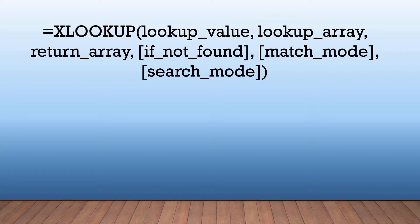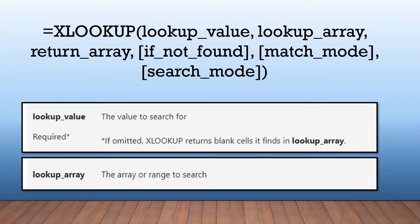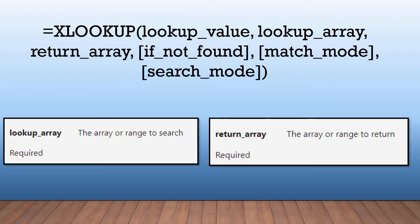Before we jump into today's example, it's important to look at the structure of XLOOKUP, as it differs from HLOOKUP and VLOOKUP. The function is written as =XLOOKUP. The first argument is the lookup value — the value to search for. This is required. The second argument is the lookup array — the array or range to search in. The third argument is the return array — the array or range to return.